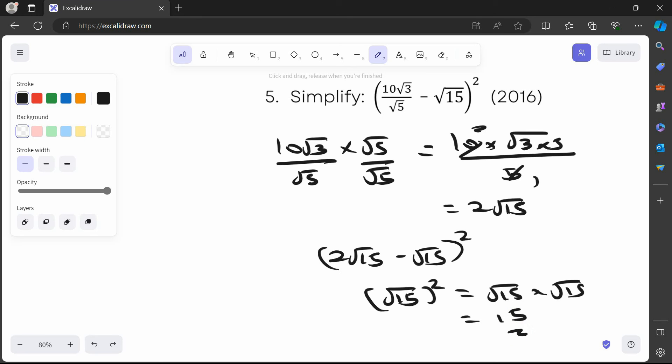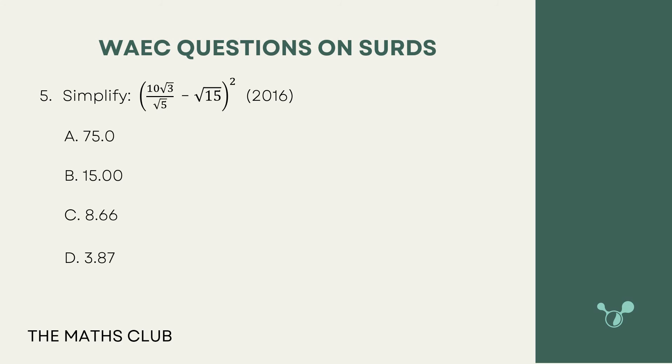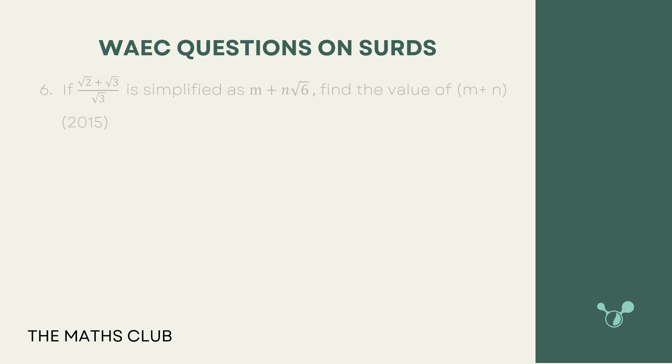So our answer is 15. One of the most important things to know about surds is rationalizing the denominator — once you can do that, you should be fine. From the options, our answer should be option B. Great.